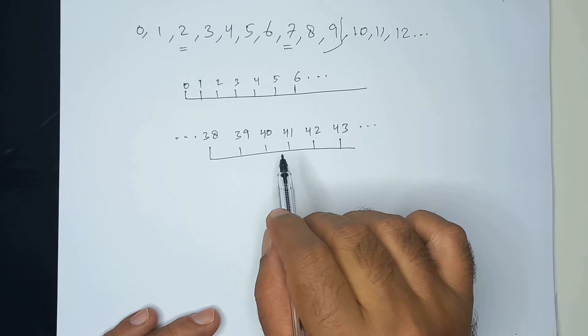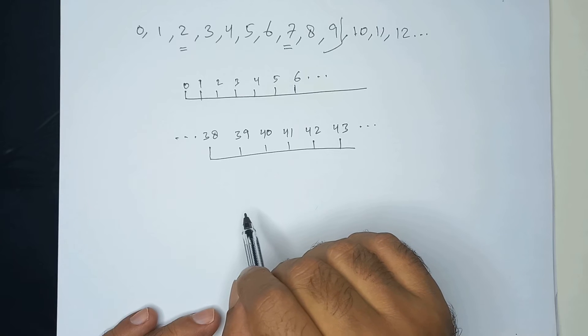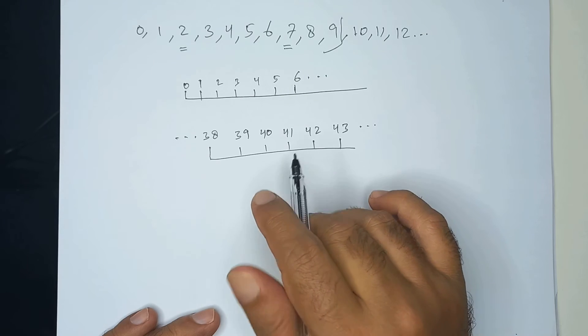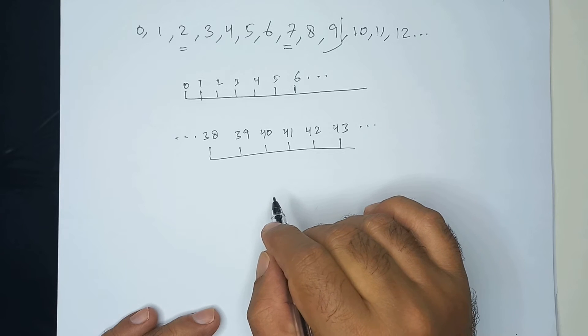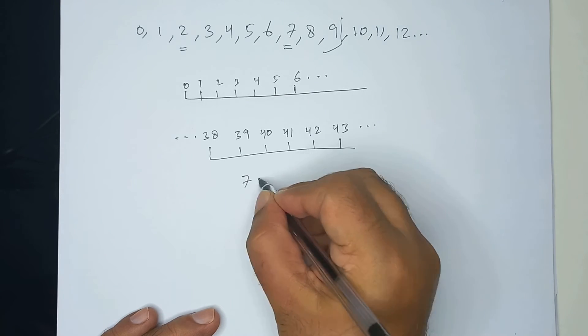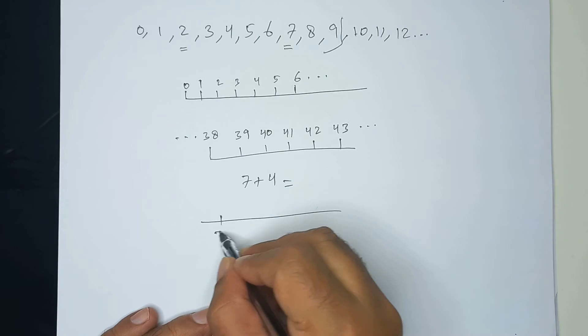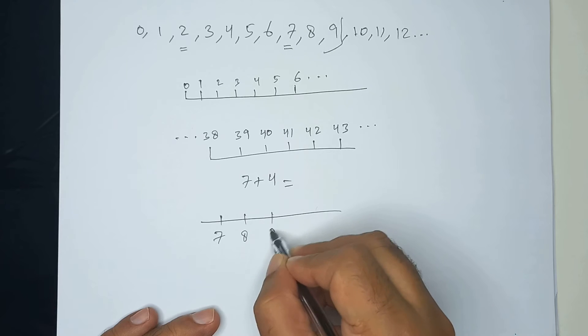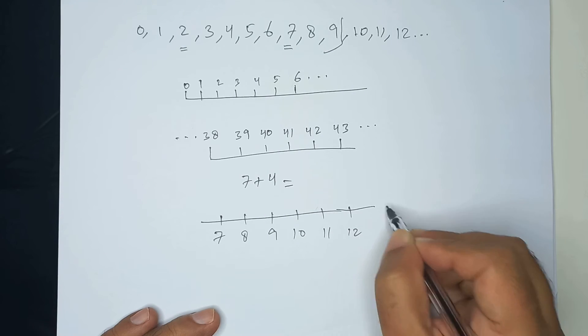This makes it easier to work with numbers, both adding and subtracting them. Now how to add using the number line? If we want to find 7 plus 4, we can start at 7, 8, 9, 10, 11, 12 and so on.